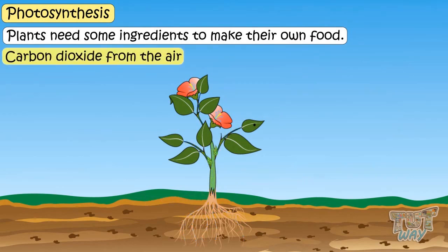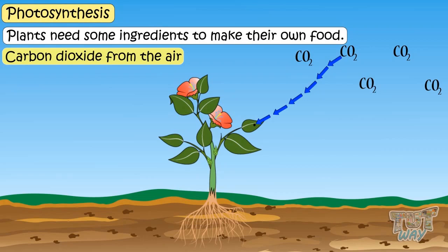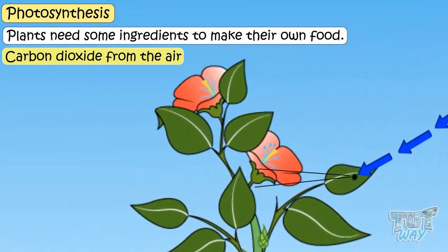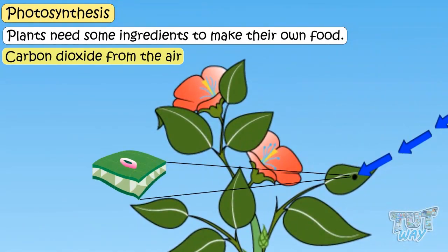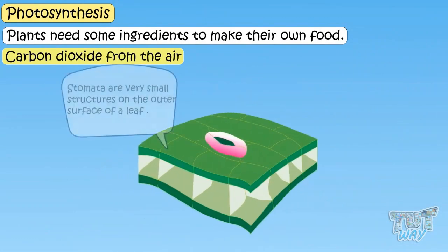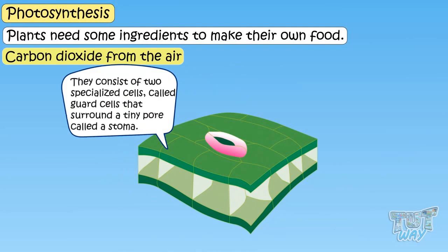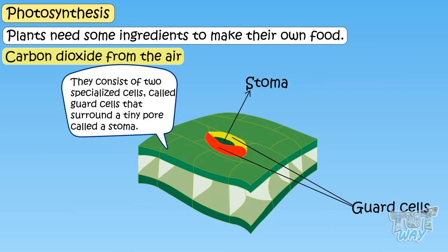Then there is carbon dioxide. Leaves get carbon dioxide from the surrounding air, and it enters the leaves through small openings called stoma or stomata. Stomata are very small structures on the outer surface of a leaf. They consist of two specialized cells called guard cells that surround a tiny pore called a stoma.